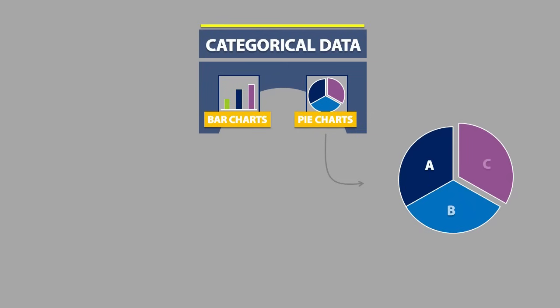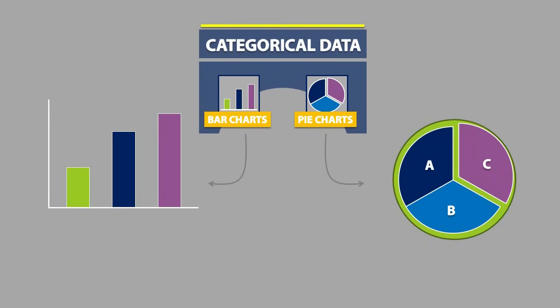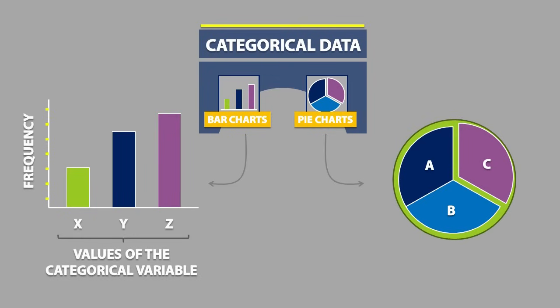Pie charts show the relative size of each value in relation to the whole. On the other hand, bar charts display the frequency on one axis and the values of the categorical variable on the other. You can think of bar charts as a way of tallying information.